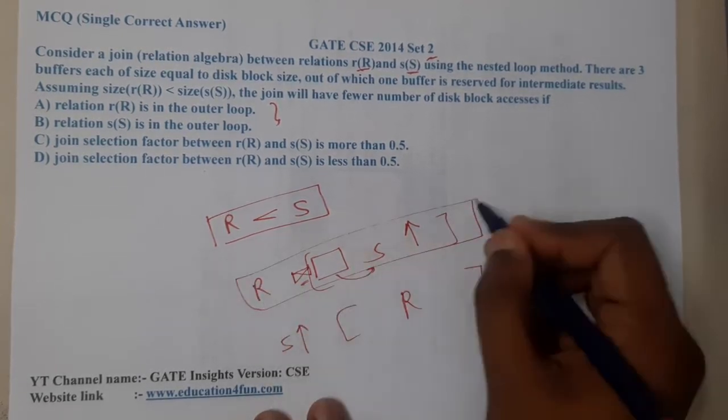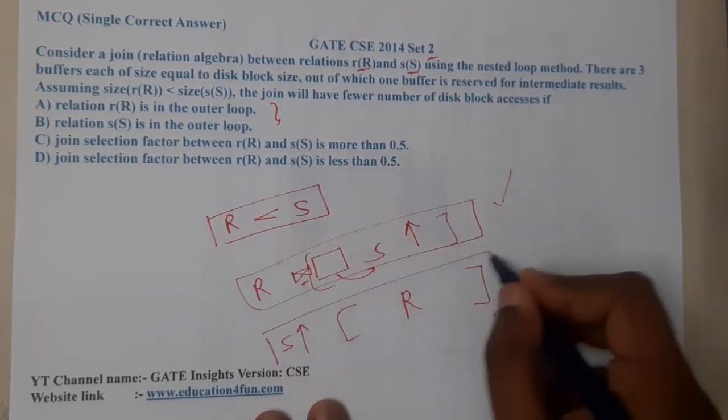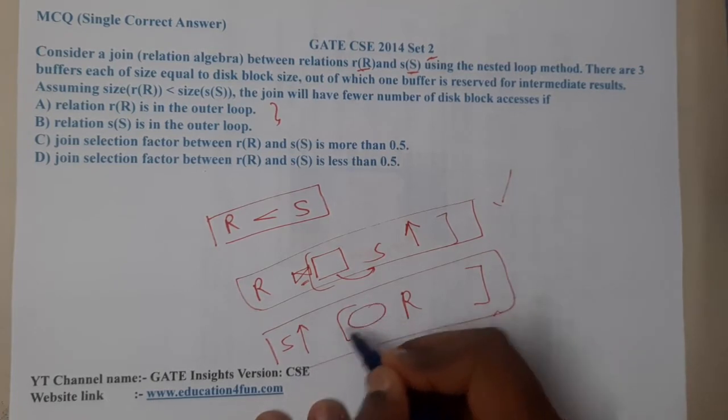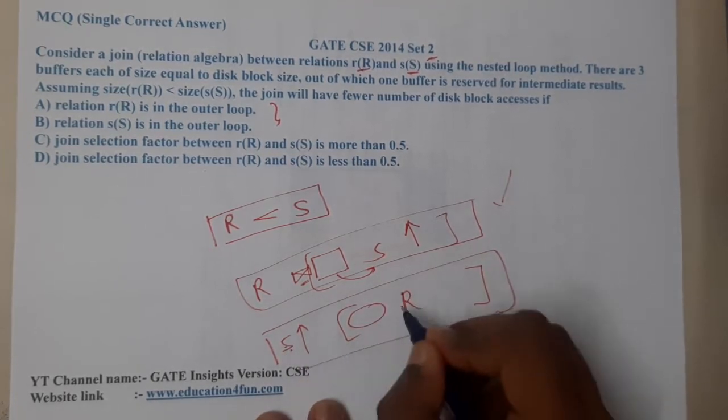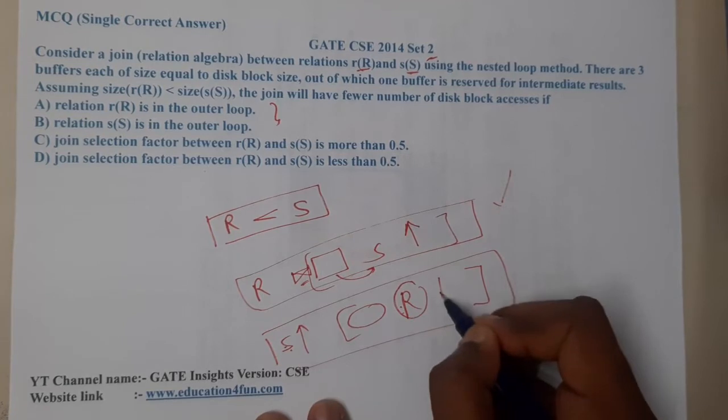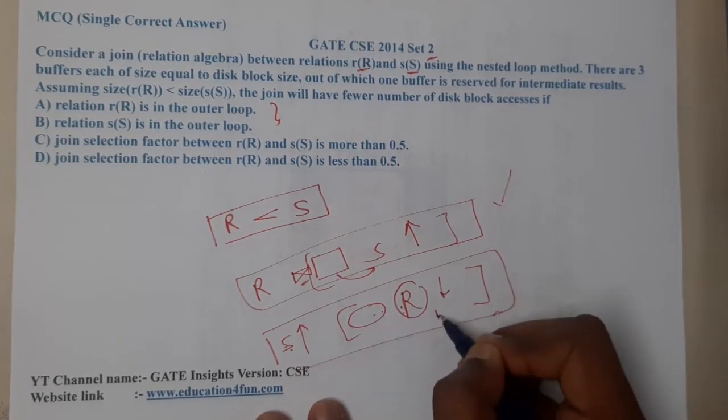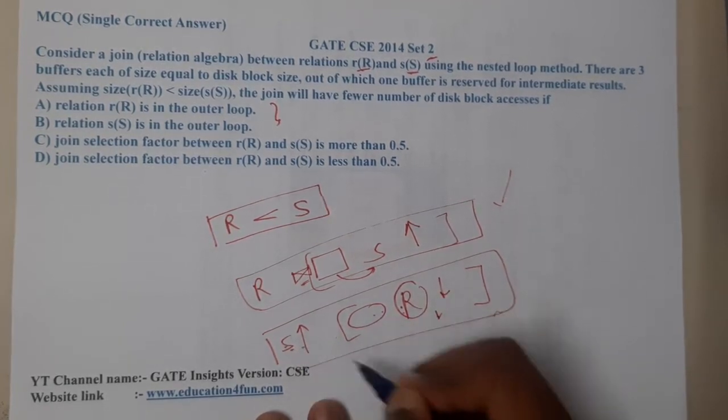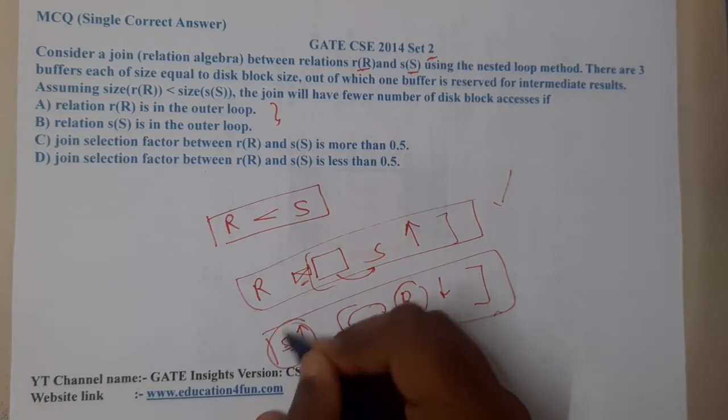So I think option A makes more sense. But when it comes to option B, we are first checking the condition and then multiplying S with R. Basically R has fewer entries, so the result will also be less. But whenever we do Cartesian product, you will get a lot of entries because S has more values.